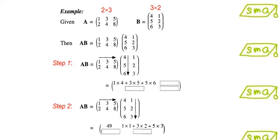We do the same thing for the next column, multiply 1, 3, 5 to 1, 2, 3. So we will get 1 multiplied by 1 plus 3 multiplied by 2 plus 5 multiplied by 3.